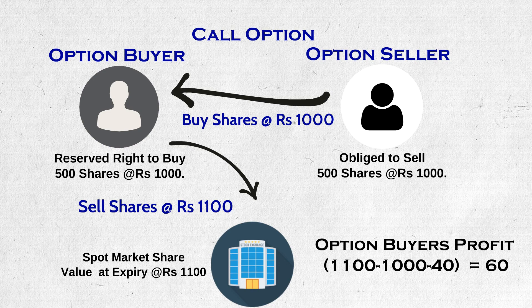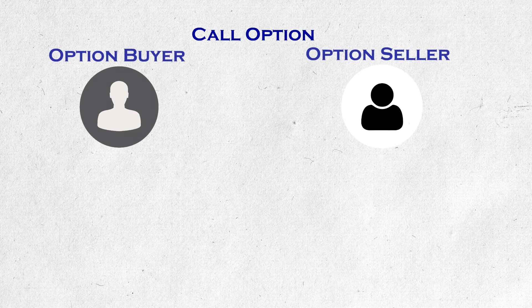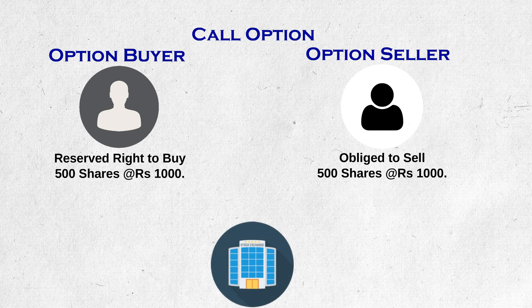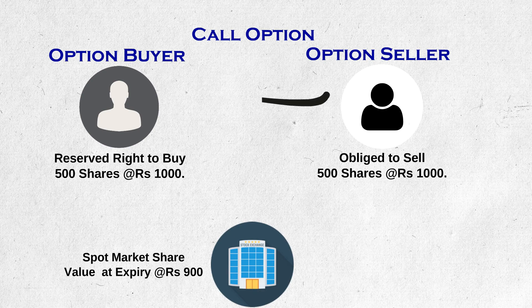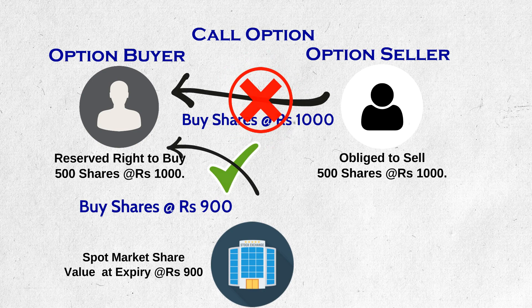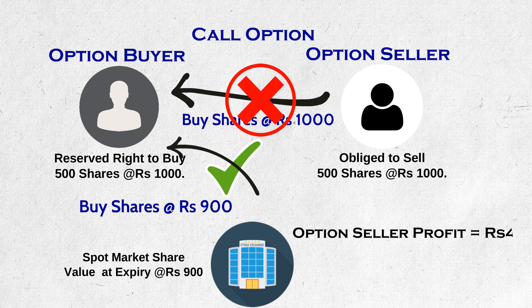So the option buyer's profit increases with increase in price, and the same amount of loss is borne by the option seller. The option seller may think that the price will not rise or will settle at the same price on expiry — that is why he sold the call option contract. For example, if the price is 900 rupees, why would the option buyer buy shares at 1000 rupees from the option seller when he can buy at 900 rupees in the open market? He leaves the contract without exercising, leaving away the premium. So the option seller profits only up to the premium amount, and the option buyer loses only the premium amount.